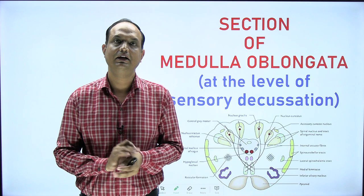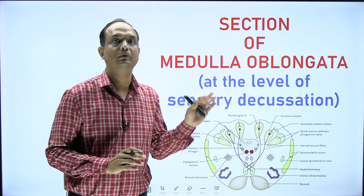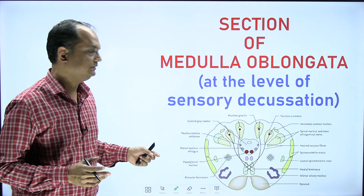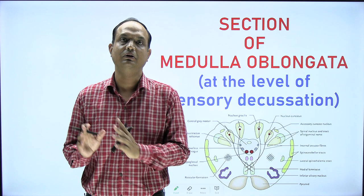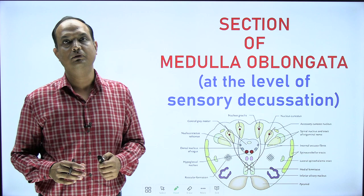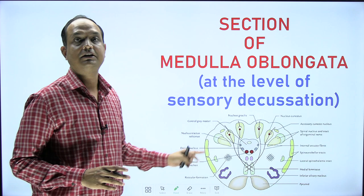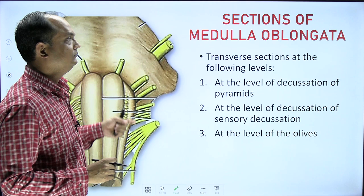Hello students, today we will discuss the section of medulla oblongata at the level of sensory decussation. In the first part on medulla, we saw the section at the level of pyramidal decussation. My sincere advice is that before watching this lecture, you should first watch my lecture on the decussation of pyramid. In today's video, we will discuss the important things you will see in this section and how to draw it in the exam.